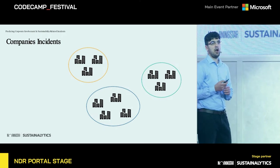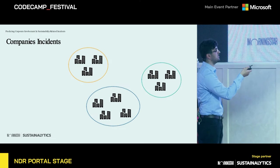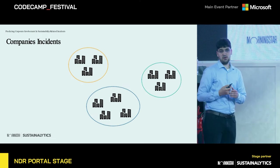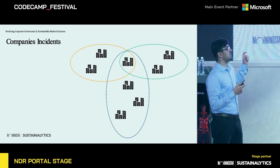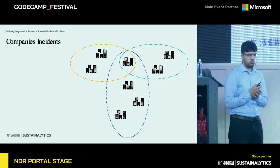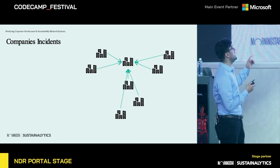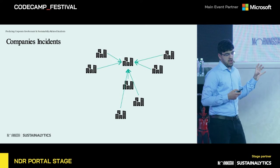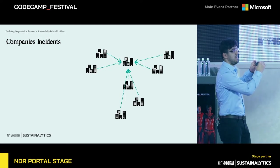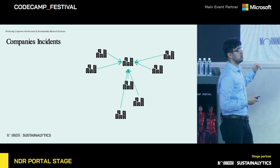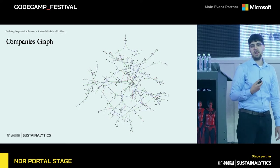Suppose we have a dataset in which companies are clustered into incidents. Let's say we have red companies incidents, green companies incidents, and blue companies incidents. Some of these companies may be part of multiple incidents, and we represent this by intersecting the clusters containing the common companies. To get a better representation of these relationships, we connect with edges each company from the same incident clusters. Companies that are part of multiple clusters will act as connection points between different clusters. Doing this for the entire dataset, we obtain a big connected graph in which companies are nodes and edges represent incidents.